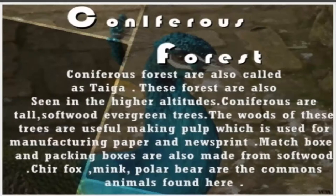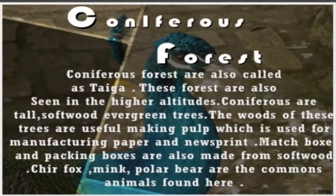The last type of forest is coniferous forest. Coniferous forests are also called taiga — this is very important information, as such questions are frequently asked. This forest is also seen at higher altitudes. Coniferous trees are tall, softwood, evergreen trees. As the wood is soft, it is useful for making matchboxes and for manufacturing paper, as it is useful for making pulp. So matchbox sticks, the manufacturing of paper and newsprint can be made with the help of coniferous forest. The silver fox, mink, and polar bear are the common animals found in the coniferous forest. This is all about the different types of forest. Thank you.